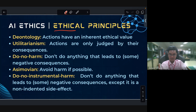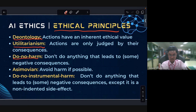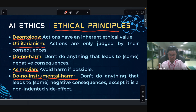There are five ethical principles. The first is teleology: does an action have an inherent ethical value? Second is utilitarianism: actions are always justified by their consequences. Third is do no harm: do not do anything that leads to negative consequences, except in cases of unintended side effects.